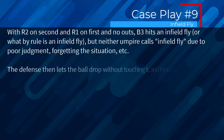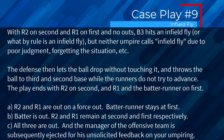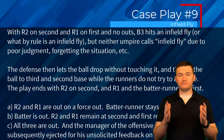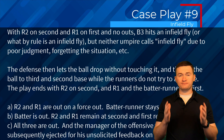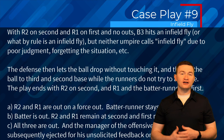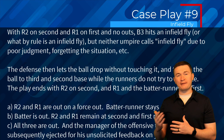Case play nine: with R2 on second, R1 on first, and no outs, B3 hits what is by rule an infield fly, but neither umpire calls it due to poor judgment. The defense lets the ball drop without touching it and throws to third and second while the runners don't advance. The play ends with R2 on second and both R1 and the batter-runner on first. Is it A — R2 and R1 out on a force out, batter-runner stays at first; B — batter is out, R2 and R1 remain at second and first; or C — all three are out? The correct answer is B. This is an infield fly regardless of whether the umpires ruled it — they can even go back and change the call. The batter-runner is out, and the other runners stay at second and first.